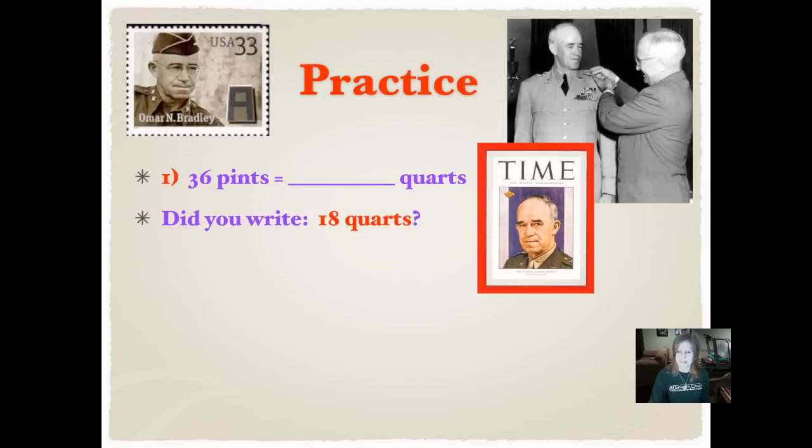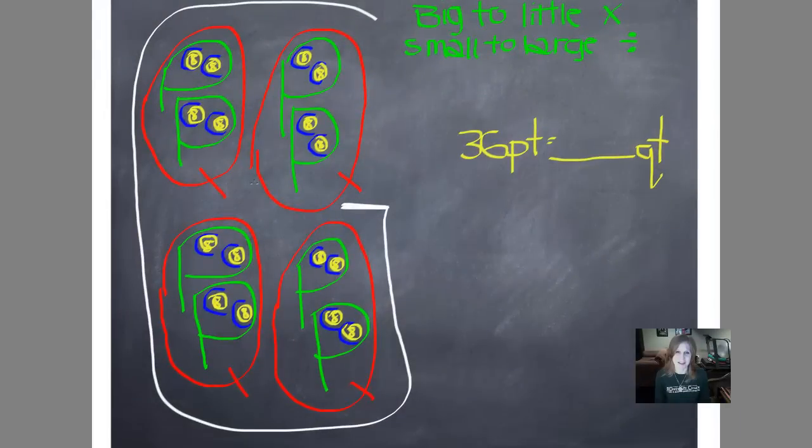Did you write 18 quarts? Let's see how we did that. Can you tell that I learn in color? I like my G chart to be all different colors. Let's start out with what we know. We have the number 36, so we'll bring it down to our workspace. Then we're starting with pints and going to quarts. So we come look at our chart, and a pint is smaller than a quart. So we're going from small to large, so we're going to divide. And we just have to know how many pints are in a quart. There are two, so we're going to divide by two. And 36 divided by two is 18, so 36 pints equals 18 quarts.